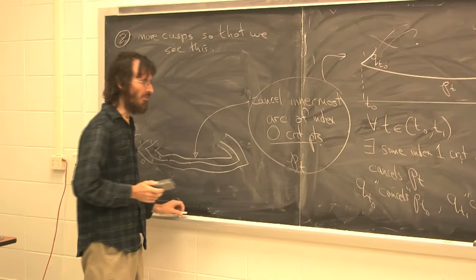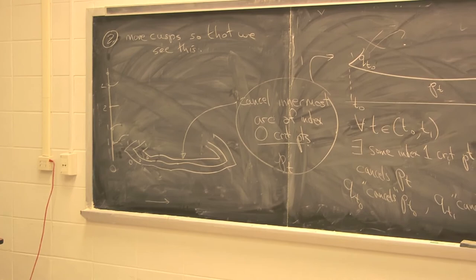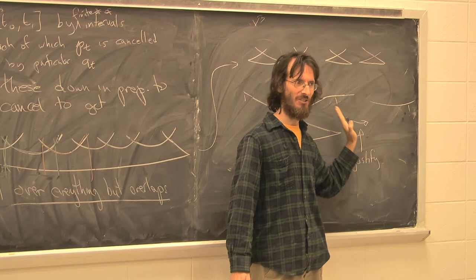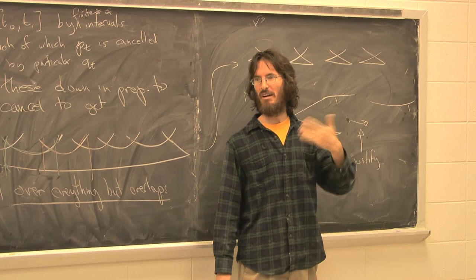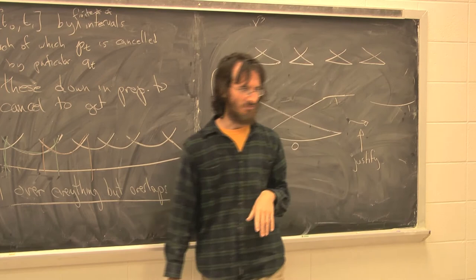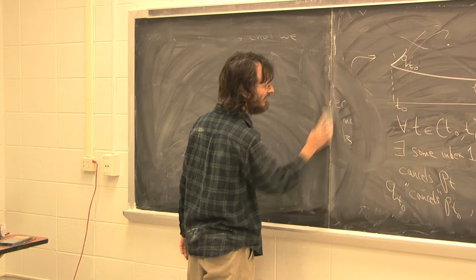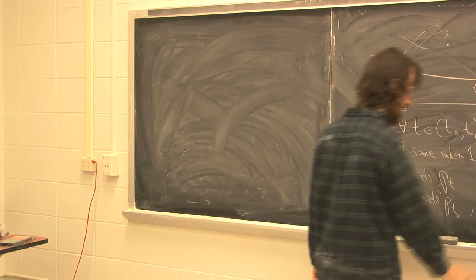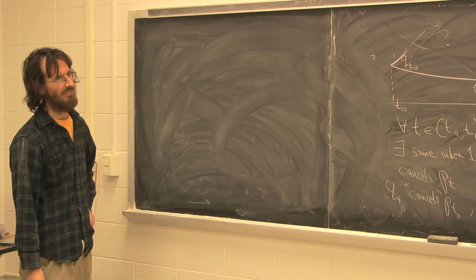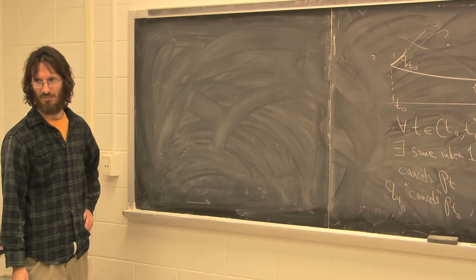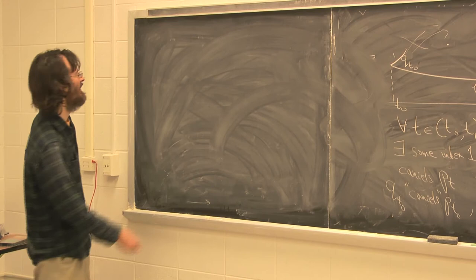What we really want to do now is cancel those remaining pieces. Focus on one: this is index-0, these two are index-1. I claim that I can show these two index-1 critical points are really just the same, and the whole thing goes away. This involves homotoping the homotopy. This is actually a two-parameter family, and the higher-order singularity that arises is called the swallowtail — and it's precisely this picture.